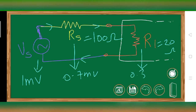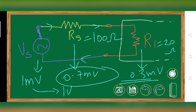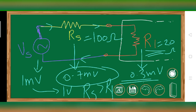The voltage drop across R1 would be just around 0.3 millivolts. So we designed our amplifier to take 1 millivolt and amplify it, but at the input of the amplifier we are only getting 0.3 millivolts — we are losing 0.7 millivolts because our R1 is less than RS. That's why the internal input impedance of the amplifier should be as high as possible.